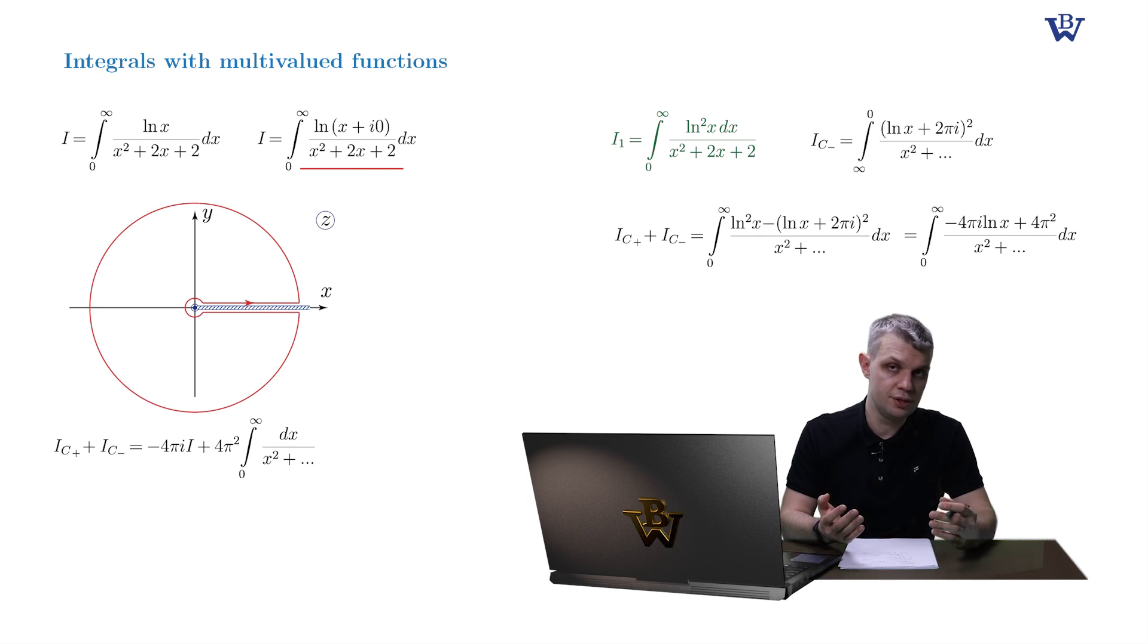Now we come to the following conclusion. In order to compute the integral with the first power of logarithm in the numerator, we need to consider a modified closed contour integral with log squared in the numerator. So now suppose your original integral contains log squared in the numerator. What do you think would be a correct change of the integral which allows you to compute the initial integral?